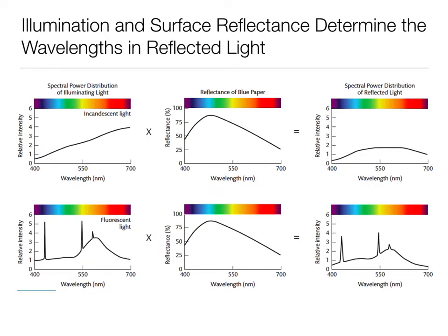Another example comes from different kinds of lighting. Here we have blue paper and the SPDs for blue paper in the middle — the reflectance of blue paper shown is absolutely identical in both cases. What's different is the illuminating light: one is an incandescent light bulb and the other is a fluorescent light bulb. Because they allow different amounts of different wavelengths, we end up getting a different SPD of the light coming back at us. But interestingly, you can look at that blue piece of paper under a fluorescent light or under an incandescent light and you're still going to think it's blue, even though we see these differences in reflected light.